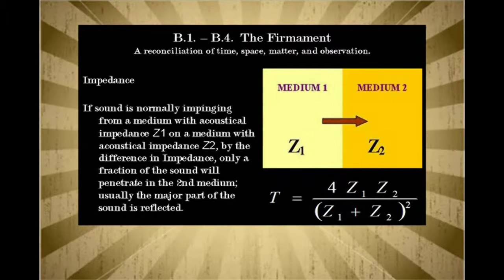If sound is normally impinging from a medium with acoustical impedance Z1, that's just any random number of acoustical impedance, on a medium with acoustical impedance Z2, by the difference in impedance, only a fraction of the sound will penetrate in the second medium. Usually, the major part of the sound is reflected.